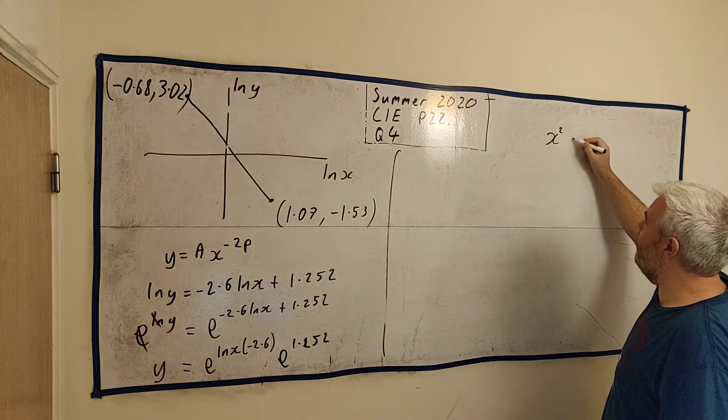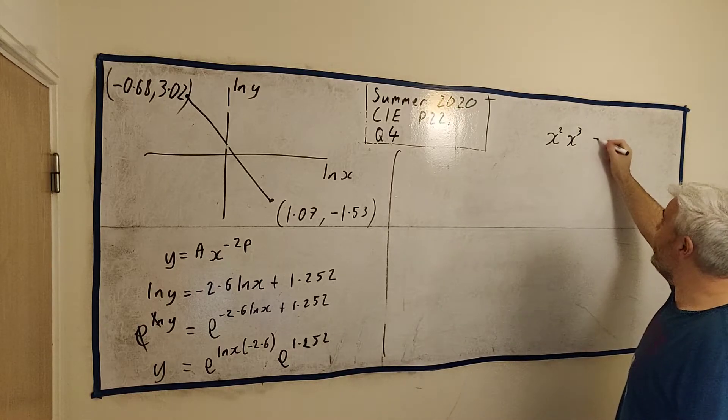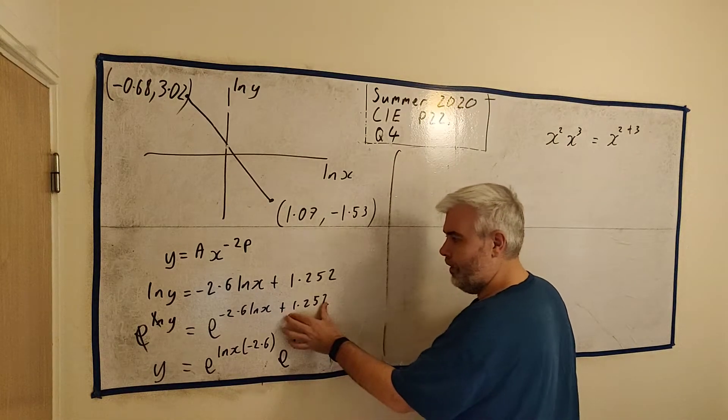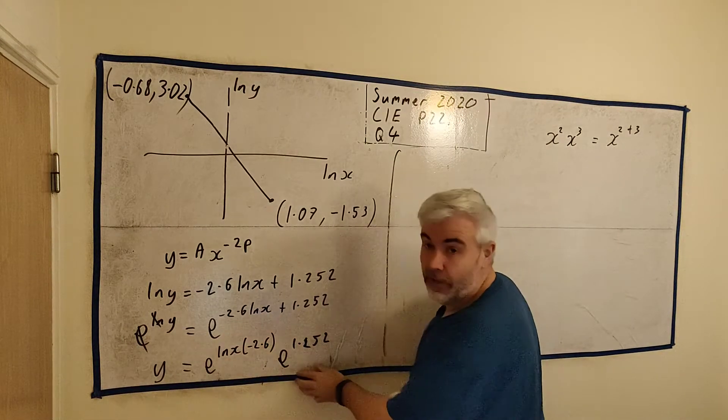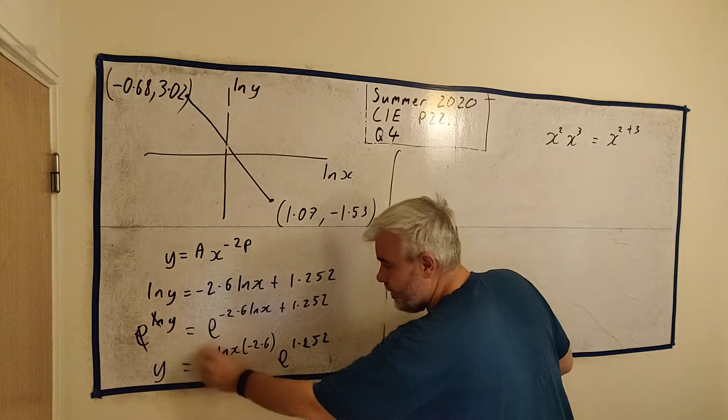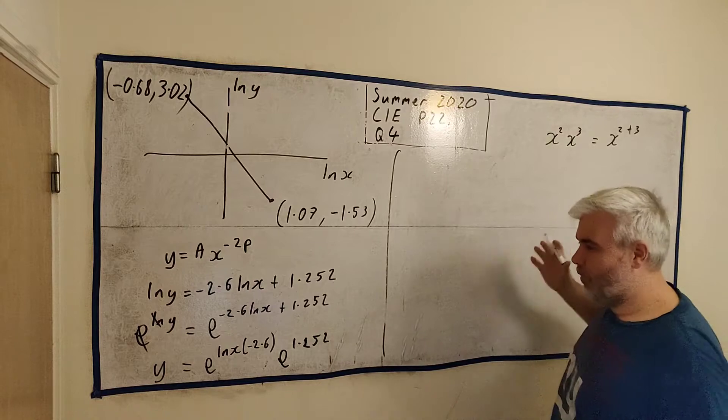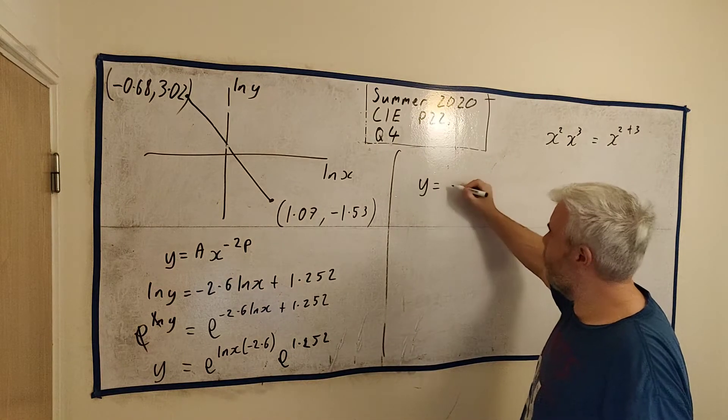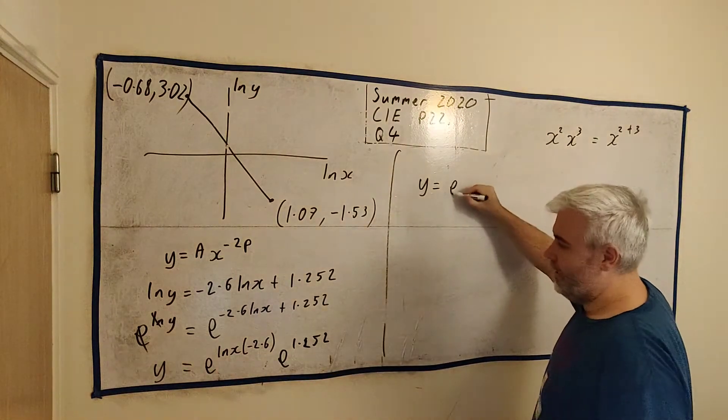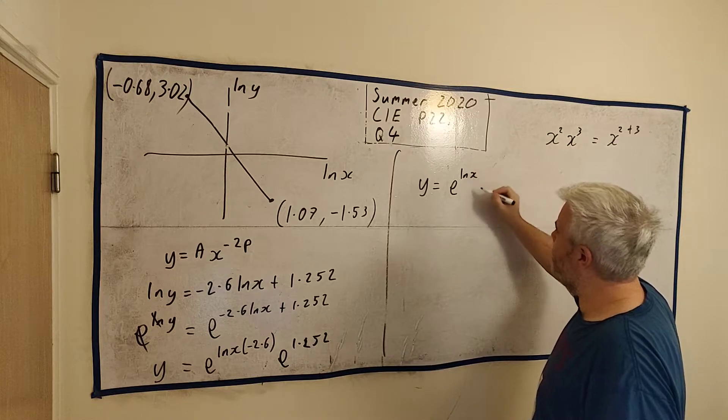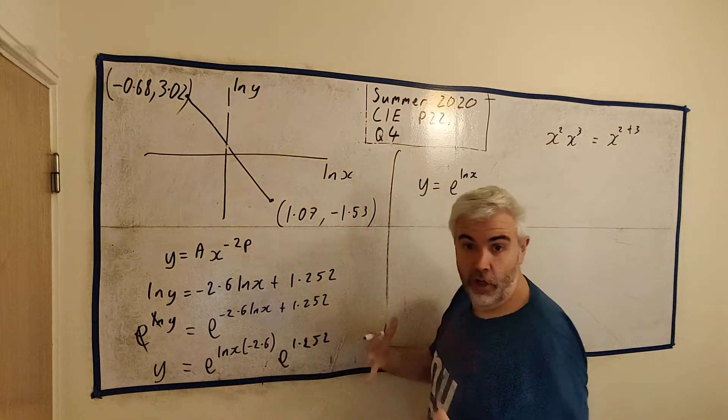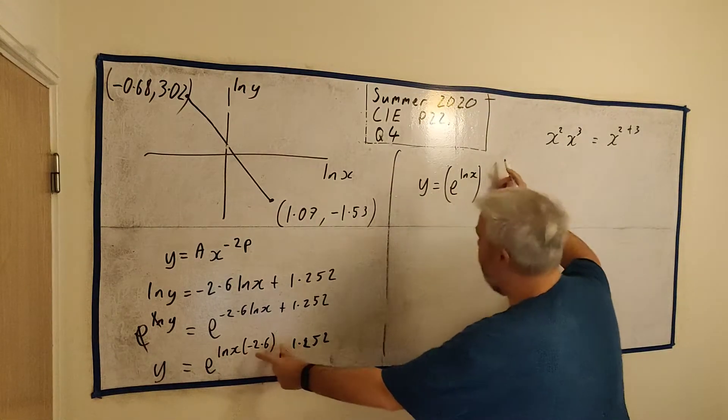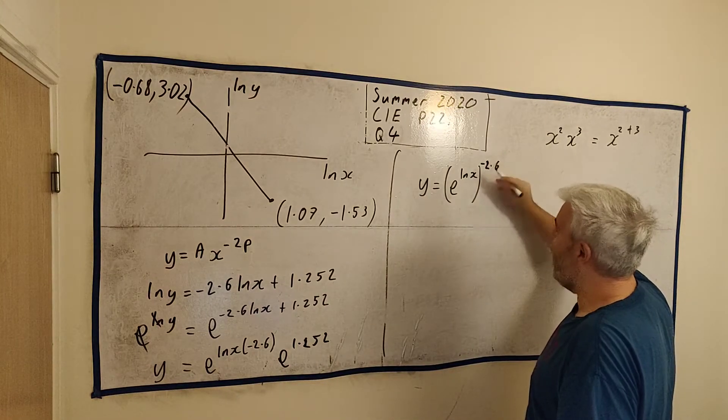And instead of e to the power of this plus this, that's the same as e multiplied by 1.252. Have a think about that one if you're not sure. It's like this, it's x squared multiplied by x to the power of 3 is equal to x2 plus 3. So that's sort of what we have here, something plus something. Well, it's the same as multiplying them when they each have their base. In this case e, in this case x. So that's where I'm getting that from. Okay, so if we continue with this line here, y is equal, right, we can change this one again. e to the natural log x, two powers to multiply.